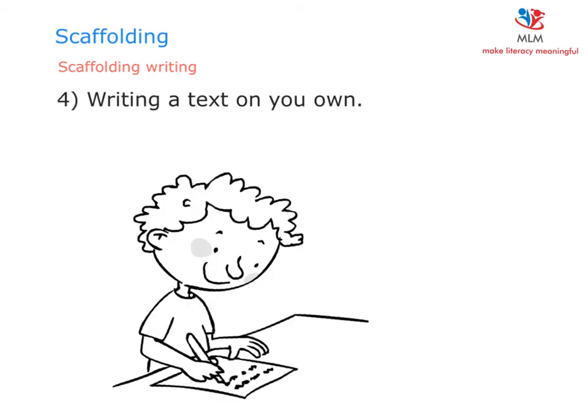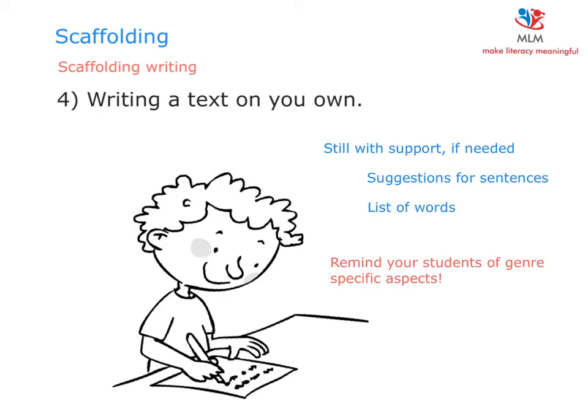The fourth and last stage of the writing circle is that your students are now asked to write their text on their own. But some children might still need extra support, such as suggestions for sentences or a list of words. Students should be reminded of the aspects discussed earlier.